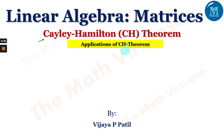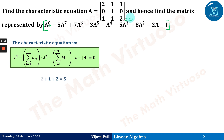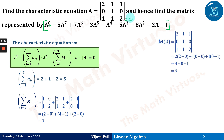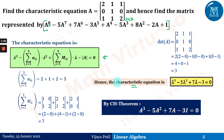We will go ahead with a few important applications using the CH theorem. The problem is: given a 3×3 matrix A, find the characteristic equation and hence find the matrix represented by the given polynomial, which contains A to the power 8. We find the characteristic equation by computing the summation of aᵢᵢ, summation of Mᵢᵢ, and the determinant, giving us λ³ - 5λ² + 7λ - 3 = 0.